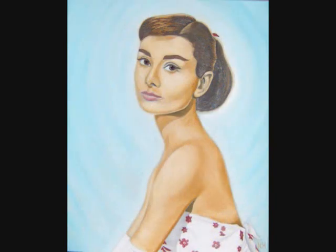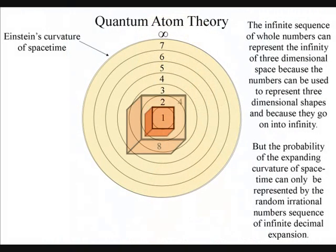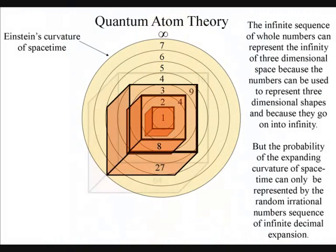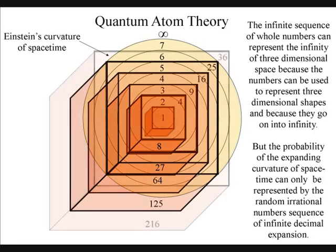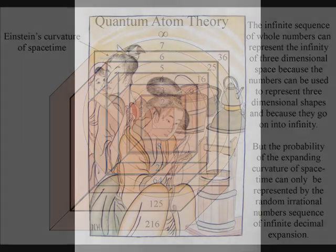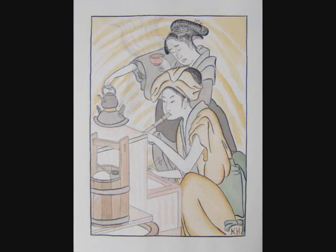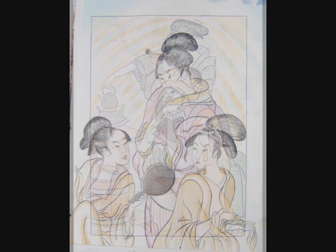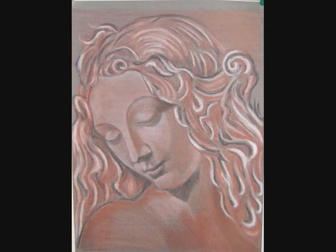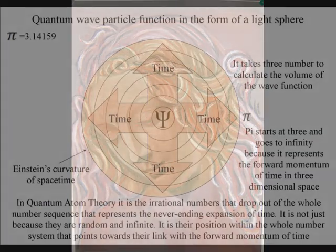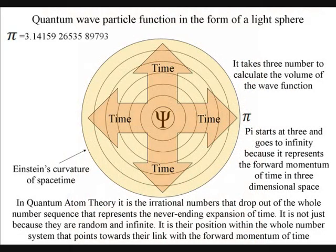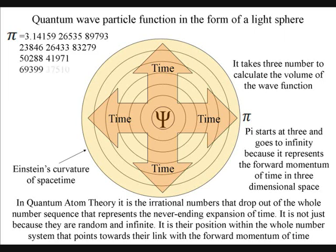It is easy to see how our infinite sequence of whole numbers can represent the infinity of three-dimensional space, because the numbers can be used to represent three-dimensional shapes. But it is the irrational numbers that drop out of the whole number sequence that represent the never-ending expansion of time. In quantum atom theory, the irrational number pi is a physical constant of probability and represents the expanding curvature of space-time. It is not just because they are random and carry on expanding forever. It is their position within the whole number system that points towards their link with the forward momentum of time.